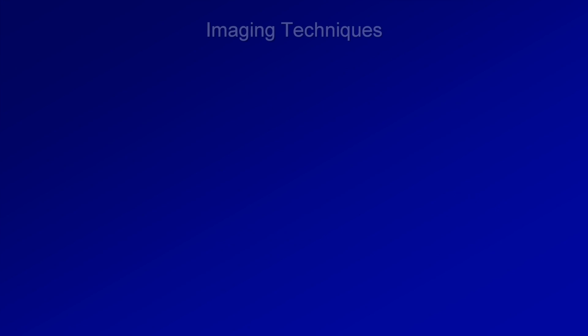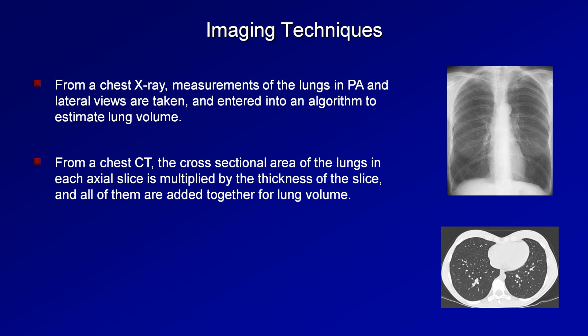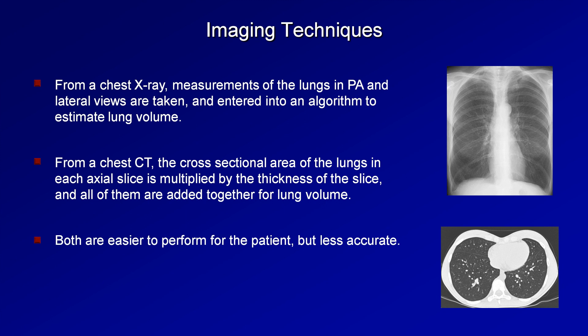The final method for measuring lung volumes are radiographic techniques. From a patient's chest x-ray, measurements of the lungs in the PA and lateral views can be taken and entered into an algorithm to estimate lung volume. From a chest CT, the cross-sectional area of the lungs in each axial slice is multiplied by the thickness of the slice, and all of them are then added together for the lung volume. Both of these are easier to perform for the patient but less accurate. The patient will still need to be able to perform an adequate breath hold and generally follow directions regarding his or her breathing pattern during the test.